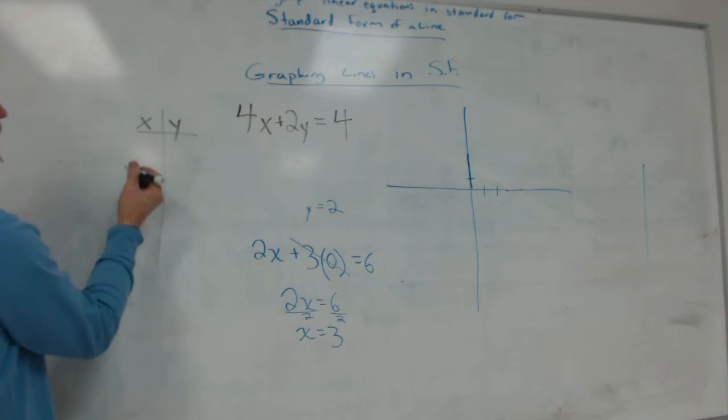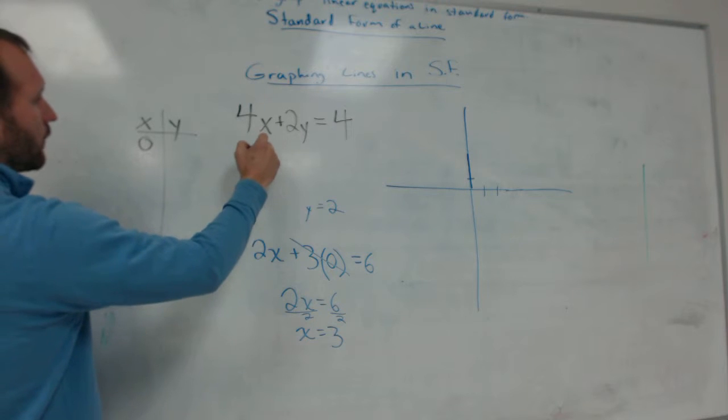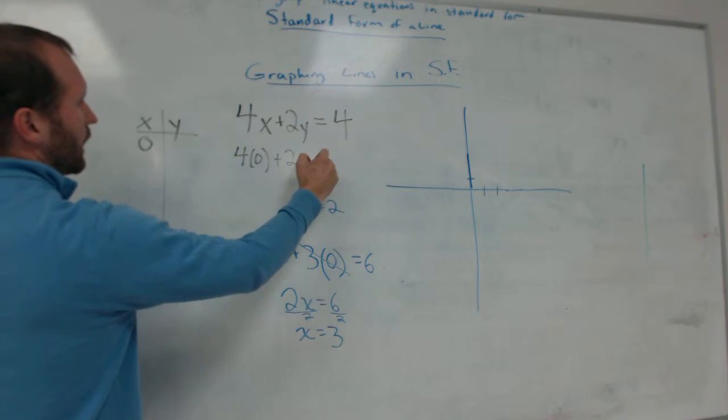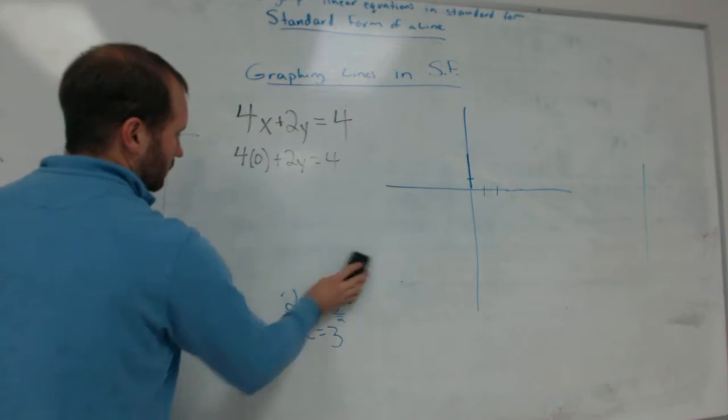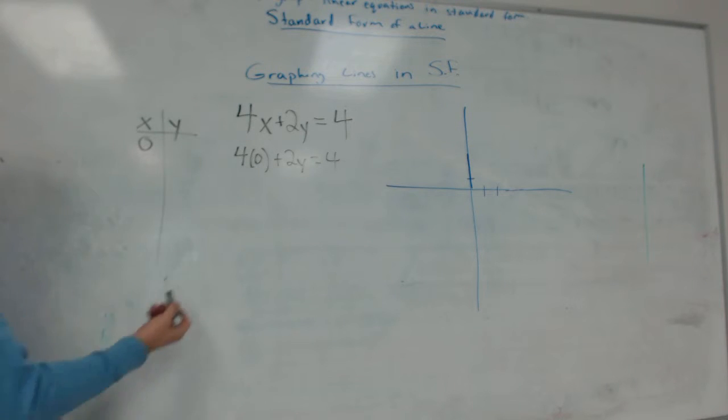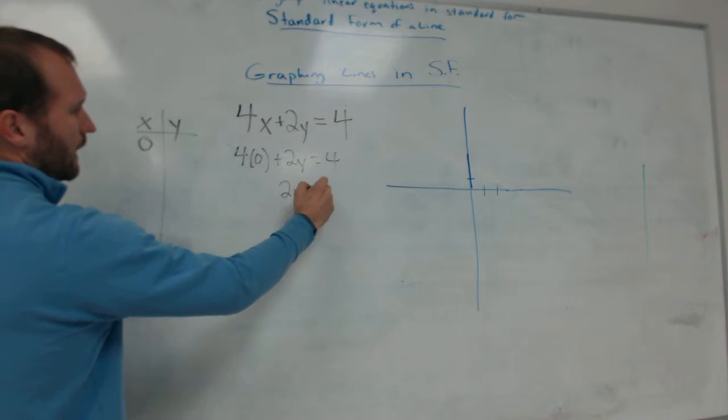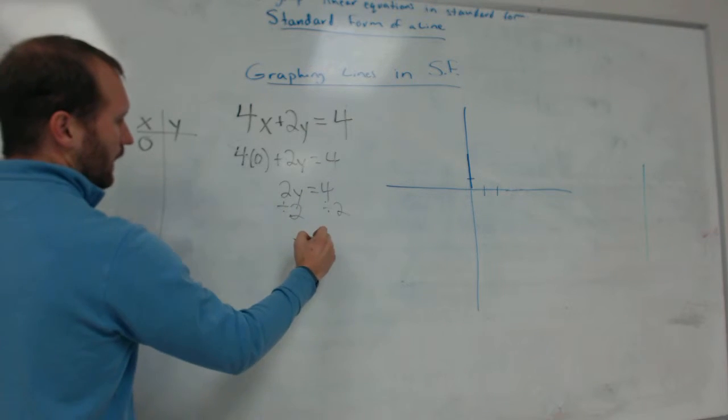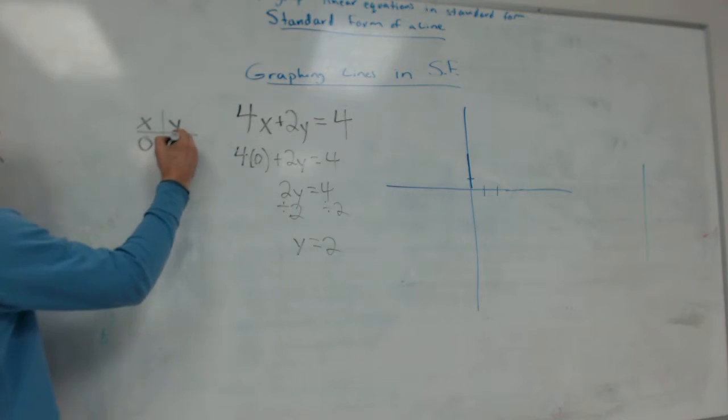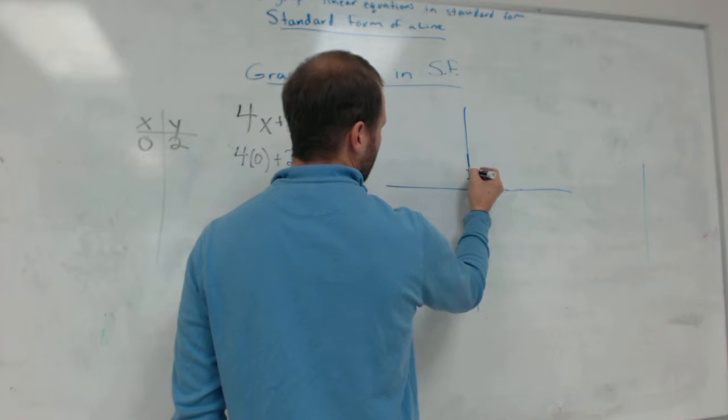I have X and Y. What am I going to pick as my first point in my T-chart? Zero. Zero for X. So if X is 0, we have 4 times 0 plus 2Y equals 4. 4 times 0 plus 2Y equals 4. What is 4 times 0? It's just 0, right? So then I have 2Y equals 4. Divide both sides by 2. Y equals 2. So I put that here. And then I go plot this point. Zero comma 2. One, two. So there's my first point.